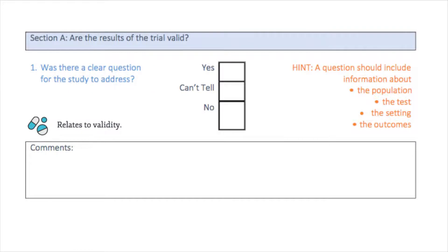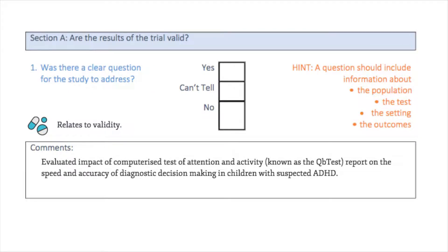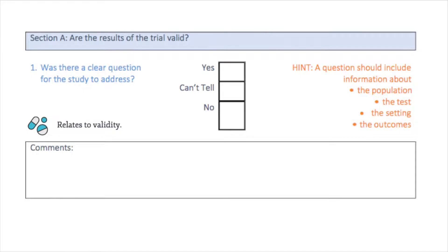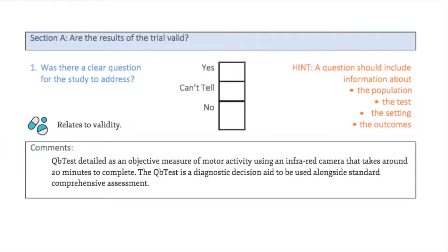We can see that the study by Hollis et al. sought to evaluate the impact of providing a computerised test of attention and activity, known as the QB test, on the speed and accuracy of diagnostic decision making. The authors contextualise and justify their research question by highlighting the need for diagnostic decision aids with an objective measure — the QB test — to complement the prevailing subjective diagnostic methods used for ADHD, which on their own can lead to diagnostic uncertainty and delay. The authors describe the QB test as a computerised continuous performance test combined with an objective measure of motor activity using an infrared camera that takes around 20 minutes to complete, used alongside standard comprehensive assessment.